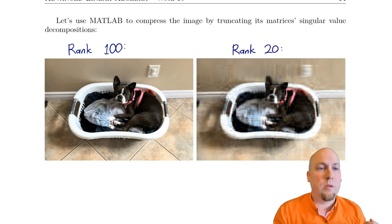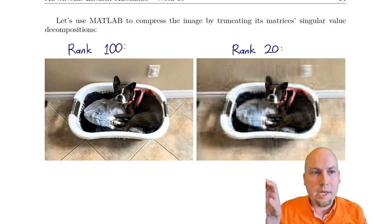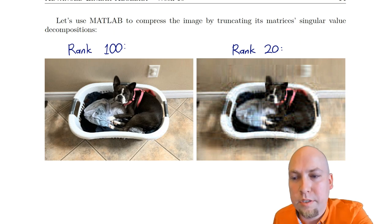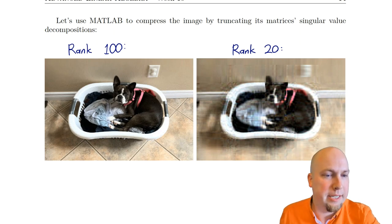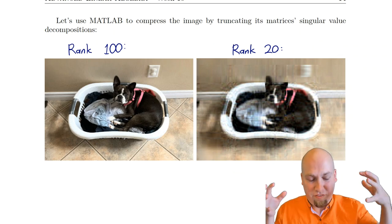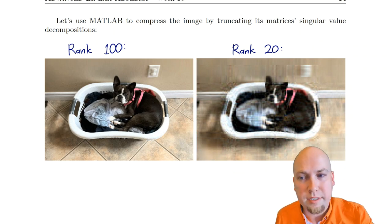Going down to rank 20 — only 20 out of 500 singular values — now it gets a lot worse. You can see it's noticeably grainy. And going further down to rank 5, it's pretty atrocious — but we're only using five out of 500 singular values, so we kind of expect that. Even using just 1% of the singular values, you at least get the color shape of the image.